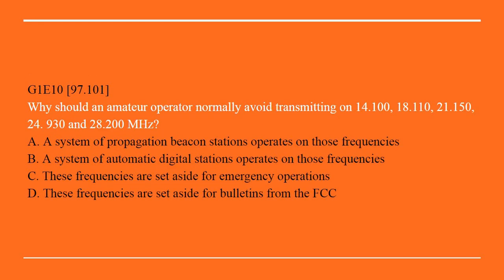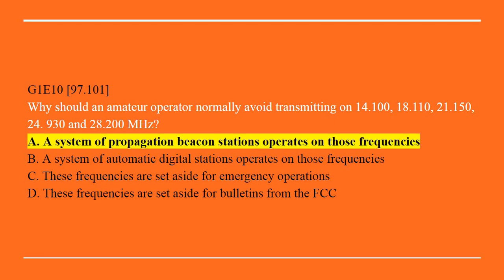G1E10: Why should an amateur operator normally avoid transmitting on 14.100, 18.110, 21.150, 24.930, and 28.200 MHz? A. A system of propagation beacon stations operates on those frequencies. B. A system of automatic digital stations operates on those frequencies. C. These frequencies are set aside for emergency operation. Or D. These frequencies are set aside for bulletins from the FCC. Correct answer is A: A system of propagation beacon stations operates on those frequencies.